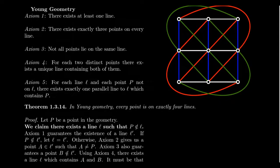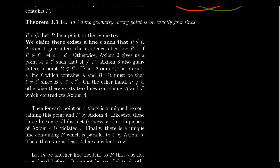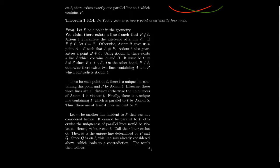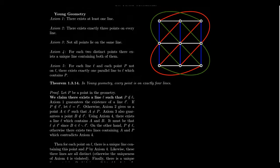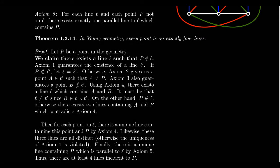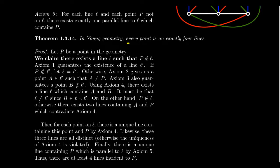Let's look at some theorems of Young's geometry. The first theorem: in Young's geometry, every point is on exactly four lines. In the picture, if you pick any point, there are exactly four lines through it, one of each color. Why is this true for every Young's geometry? To prove a statement about every point, we take a generic point P and prove something about it without additional assumptions.